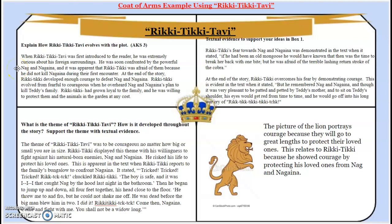Here we have an example of a coat of arms using Rikki-Tikki-Tabby. We spent a lot of time with Rikki-Tikki-Tabby and actually completed a theme analysis project as well. So this example using Rikki-Tikki-Tabby should be helpful when you have to complete slide 5. You're completing slide 5 after reading the story Young Arthur, and everything you write about will be about Young Arthur. This example is just to help you with understanding what you should be writing on each slide.